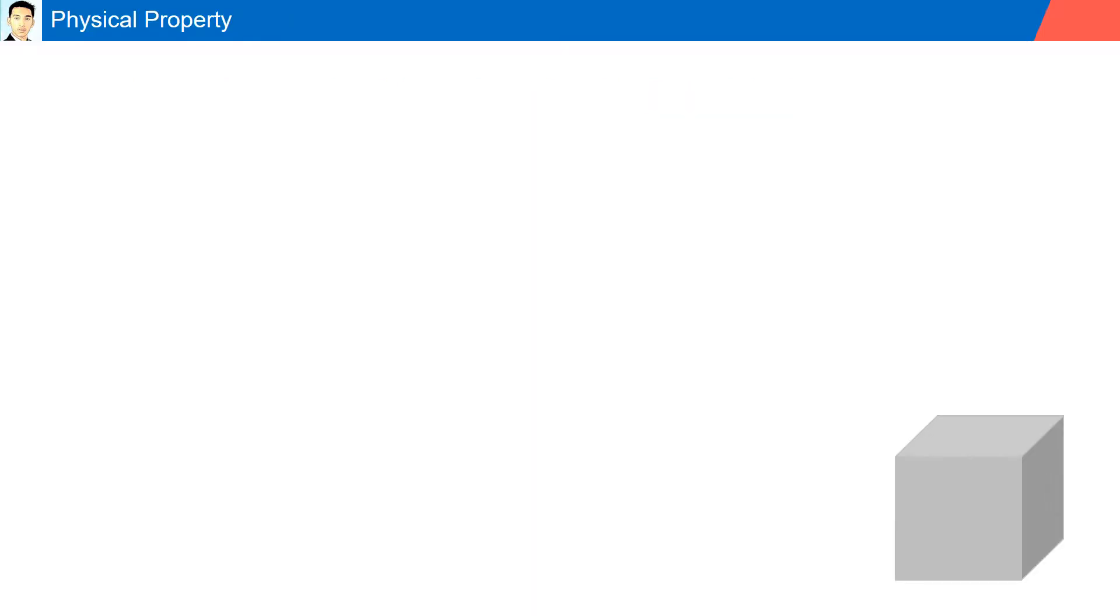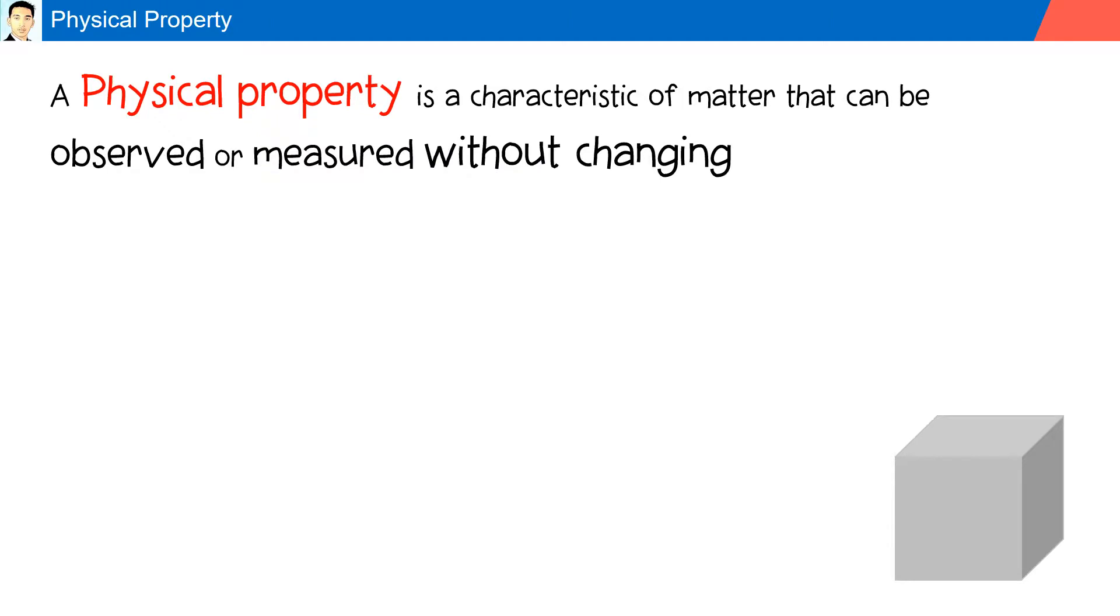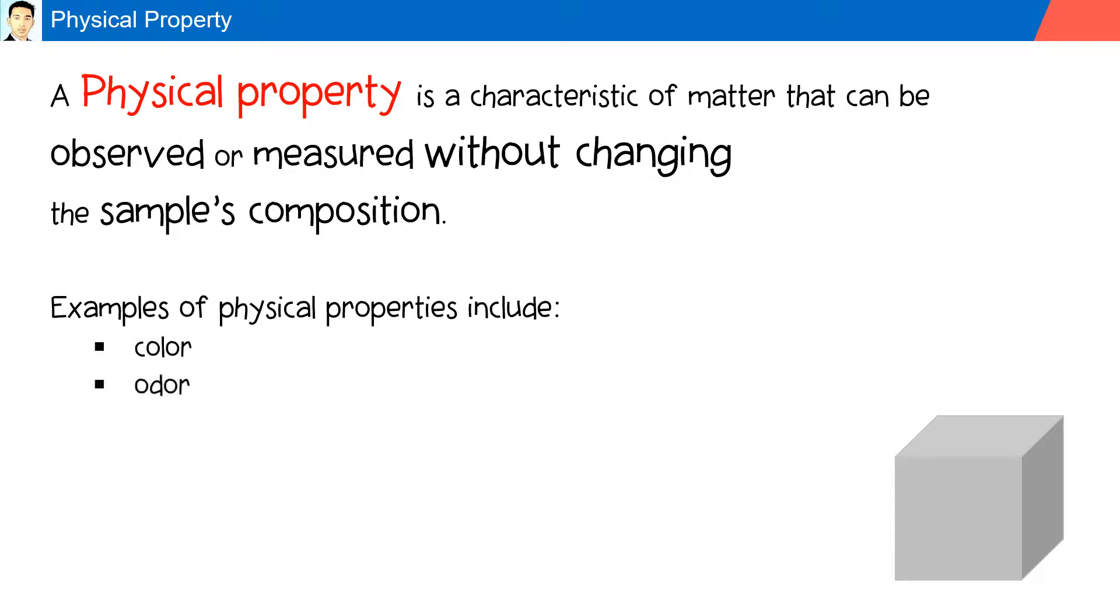Physical property. A physical property is a characteristic of matter that can be observed or measured without changing the sample's composition. Examples of physical properties include color, odor, hardness, melting point, boiling point, and density.